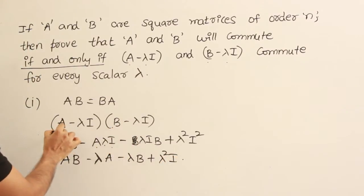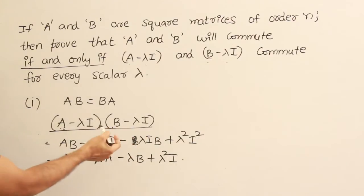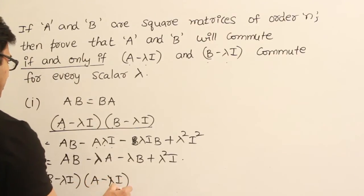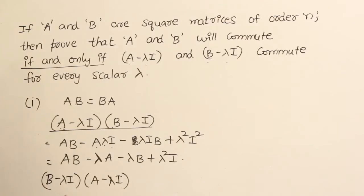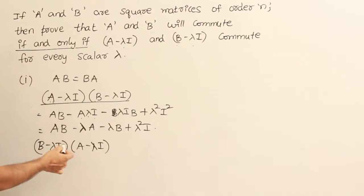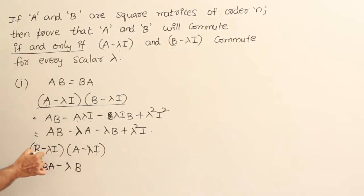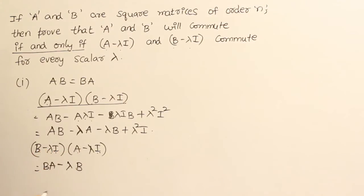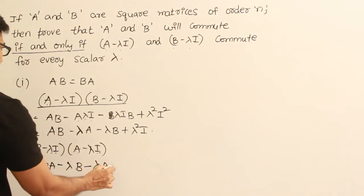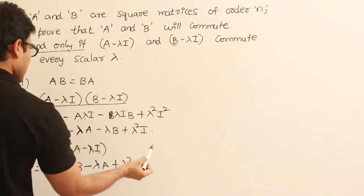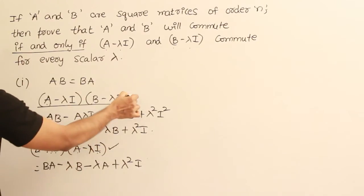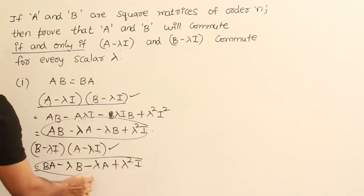Now I have to find out B minus lambda I multiplied by A minus lambda I. Expanding this gives BA, minus lambda times B (since I into B is B), minus lambda times A (since I into A is A), plus lambda squared I. So the result of B minus lambda I into A minus lambda I is BA minus lambda B minus lambda A plus lambda squared I.